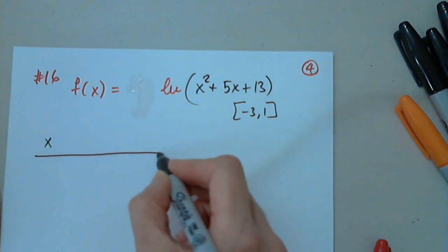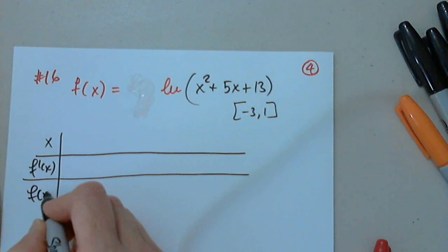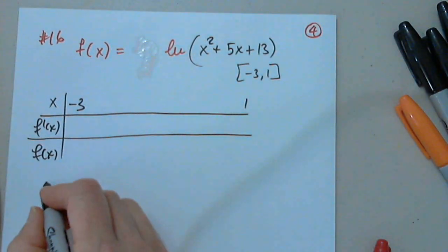I get my table going. I have to have f prime. I have to have f of x. I have to have negative 3 to 1, mandatory. And I have to differentiate that.